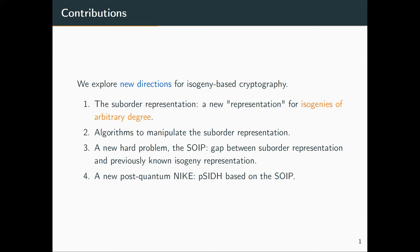This is quite nice because it means that we have a gap — two isogeny representations for which we have efficient algorithms, but the two are not equivalent with one another. We are going to exploit that gap to introduce a new post-quantum non-interactive key exchange called PSIDE, for prime SIDH.